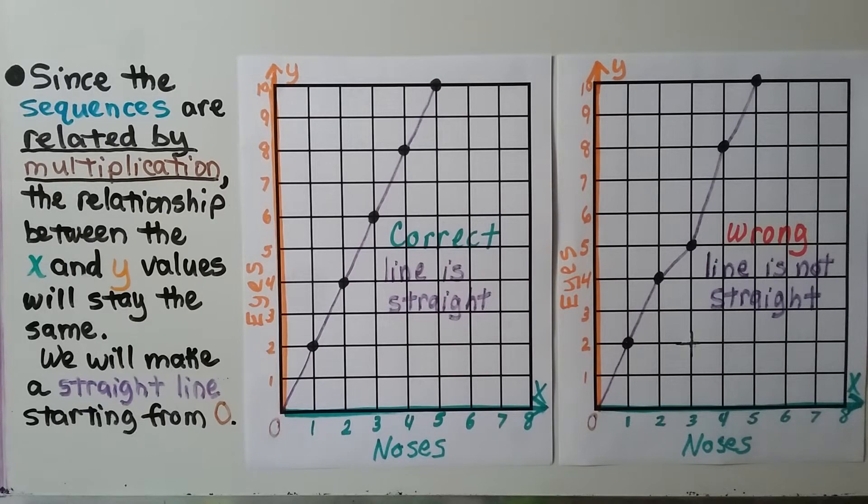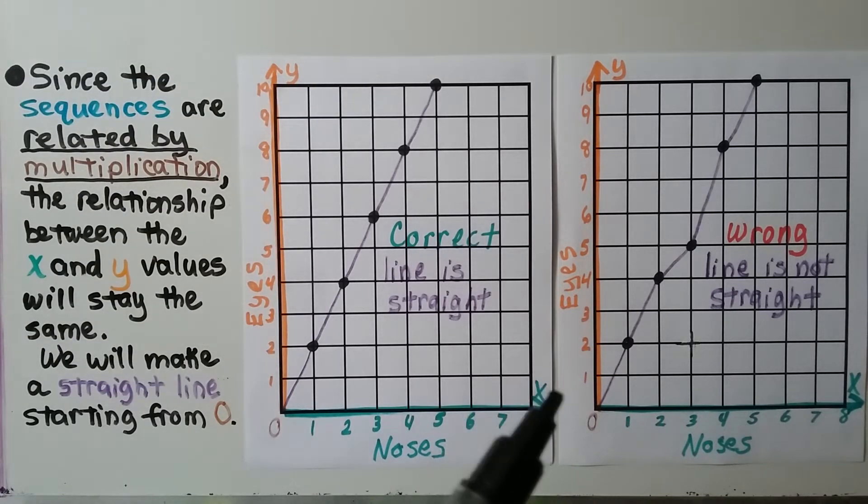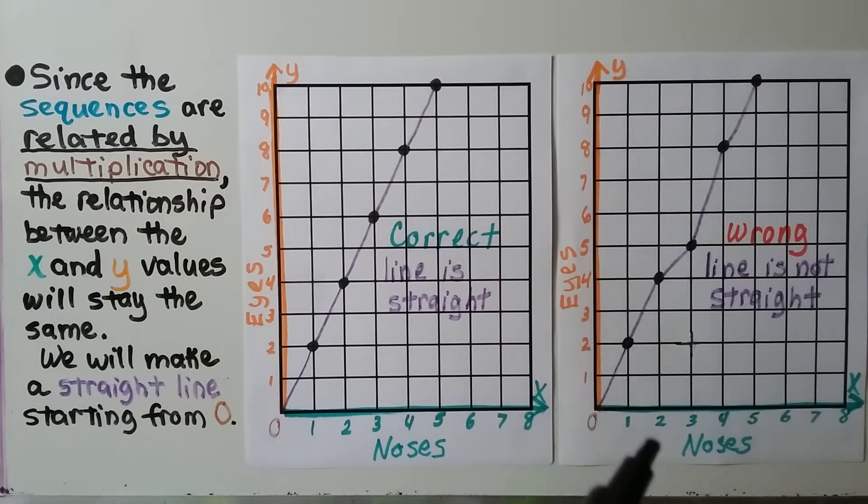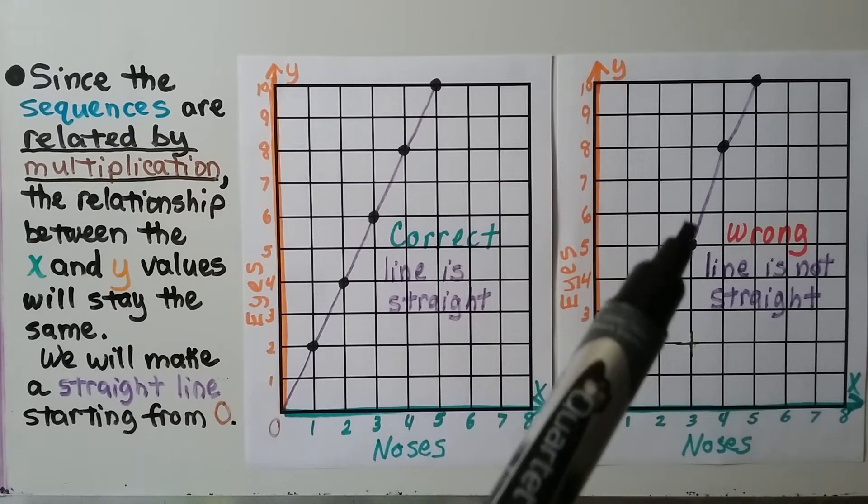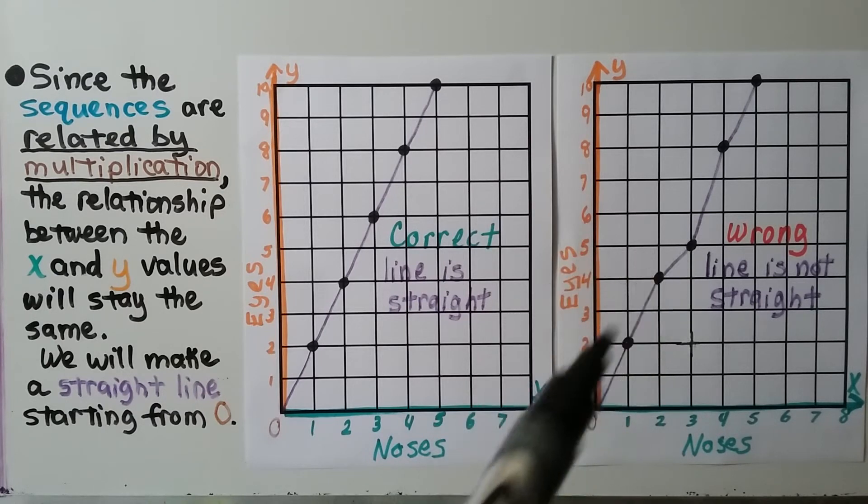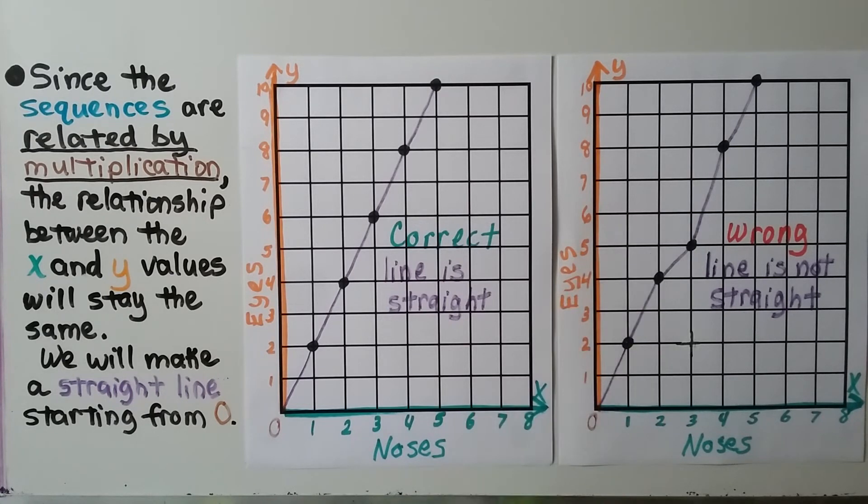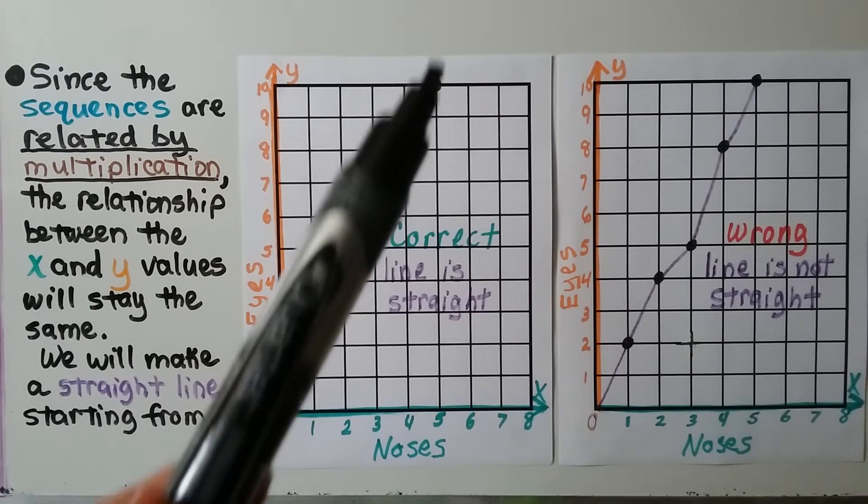Since the sequences are related by multiplication, the relationship between the x and y values will stay the same. We will make a straight line starting from 0. So this would be correct because our line is straight. And this would be wrong because our line is crooked. That means we didn't plot the points correctly. It should have been at 3 for x and 6 for y. And it was accidentally plotted at 3 for x and 5 for y. So we know we didn't plot the points correctly before connecting them because the line is crooked. If the sequences are related by multiplication, we're going to have a straight line.